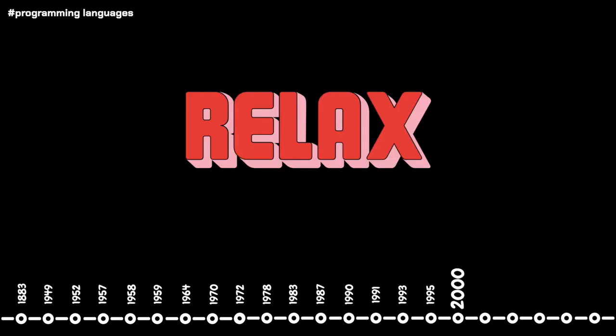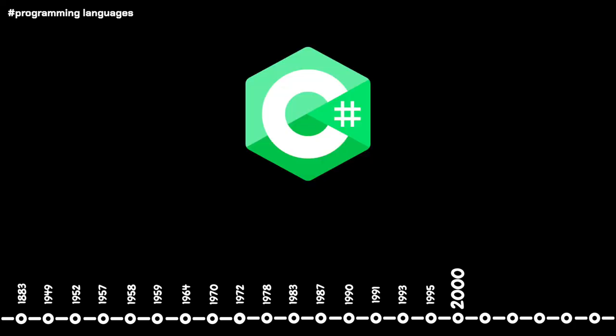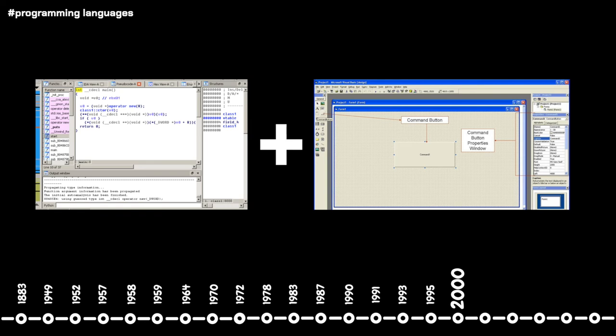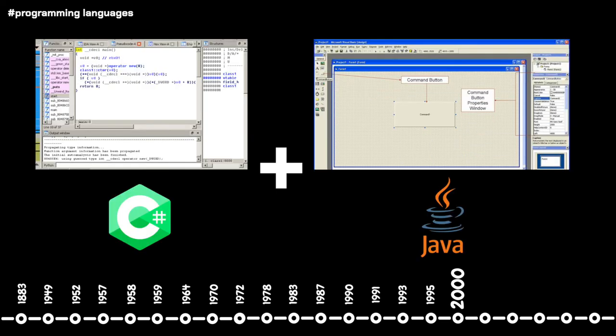We go into a relaxation period of five years until we hit 2000 with the development of C#. Created by Microsoft as part of the .NET initiative, C# was designed to combine the computational ability of C++ with the simplicity of Microsoft's previous Visual Basic. C# is comparable to Java and is widely used for many Microsoft products and applications. C# consists of strong typing, lexical scope, and is object-oriented, among other features.